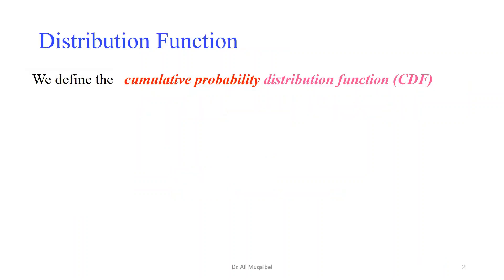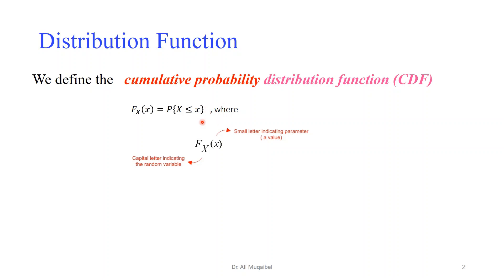The distribution function is the cumulative probability distribution function, or in short, CDF. The CDF defines the probability of being less than or equal to a given value — equal is included. This is why we call it cumulative, because it accumulates all the previous numbers. Usually, we write it as capital F, with the random variable as a subscript, and the small letter indicates the parameter value.